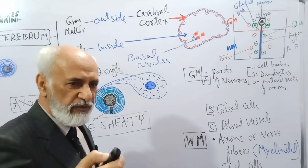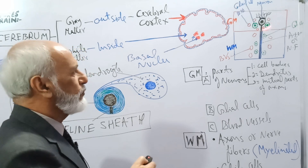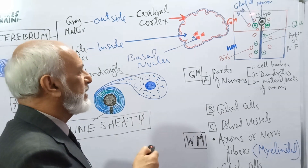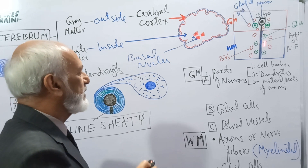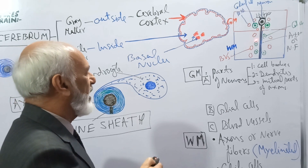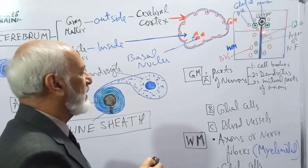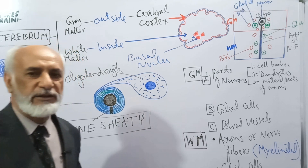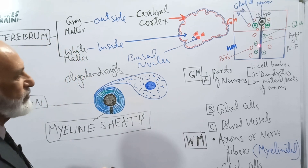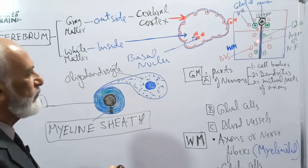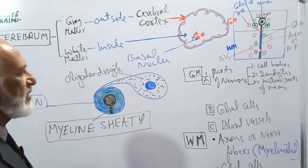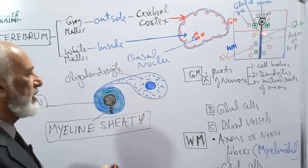If you cut a section of a fresh brain, you can see with your naked eye grey matter outside and white matter inside. The white matter appears white because of myelinated nerve fibers. These axons are supported by glial cells, which provide physical and nutritional support, and there are blood vessels.